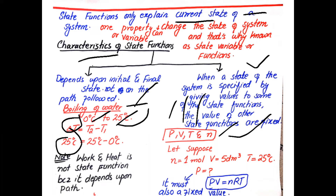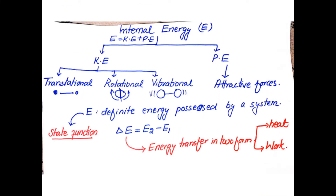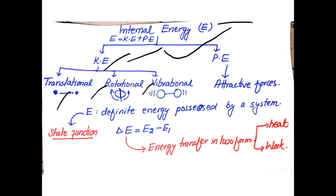Internal energy is the sum of the kinetic energy and potential energy of a system. Kinetic energy exists in three forms in any system: translational, rotational, and vibrational.